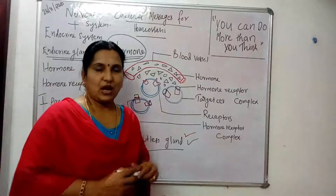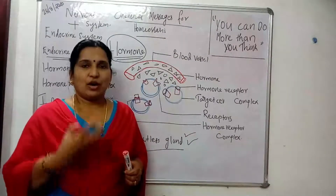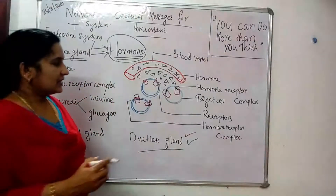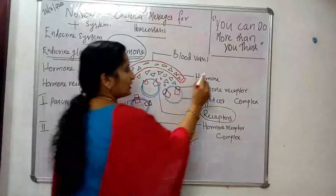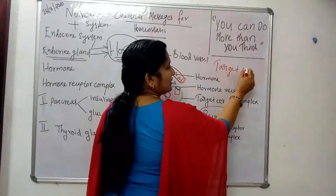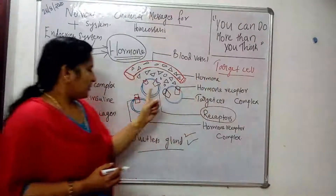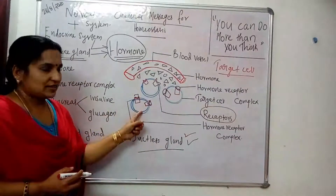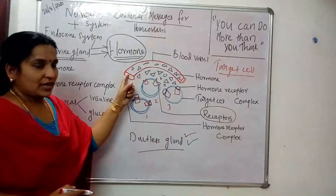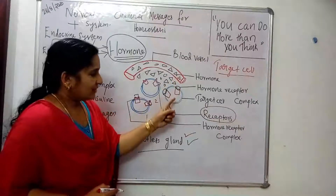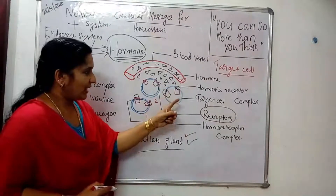Now, how do hormones act on cells? In order to receive a hormone, a cell must possess certain receptors. Before studying receptors, we need to understand what a target cell is. A target cell is simply the cell that requires the hormone. When hormones are transported through the blood, the cells that require them receive those hormones — these are the target cells.